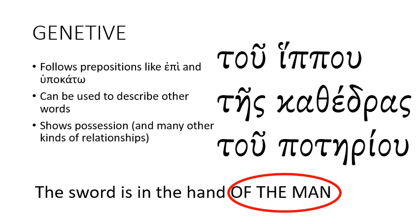Sometimes the genitive indicates ownership. For example, 'the shirt of Matthew' — whose shirt is it? It's Matthew's shirt, the shirt that belongs to Matthew. But most often it shows some other kind of relationship between the two words. So we can say 'the sword is in the hand of the man' — 'of the man' is the genitive case. Whose hand? The hand of the man.